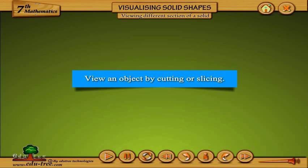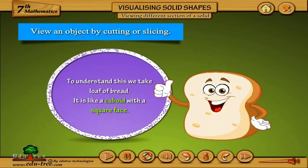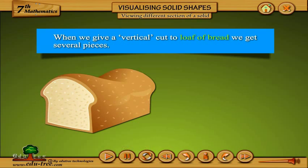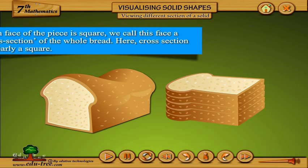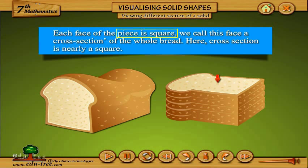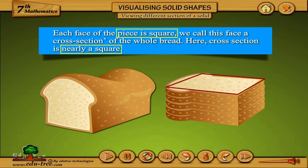View an object by cutting or slicing. To understand this, we take a loaf of bread — it is like a cuboid with a square face. When we give a vertical cut to the loaf of bread, we get several pieces. Each face of the piece is square. We call this face a cross section of the whole bread. Here, the cross section is nearly a square.